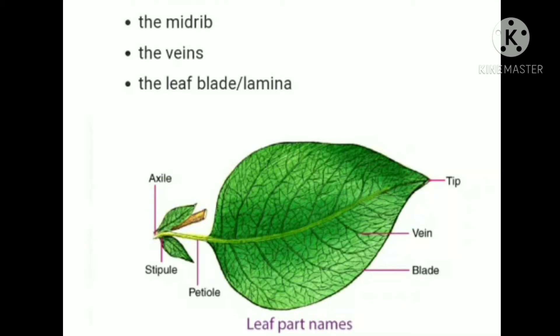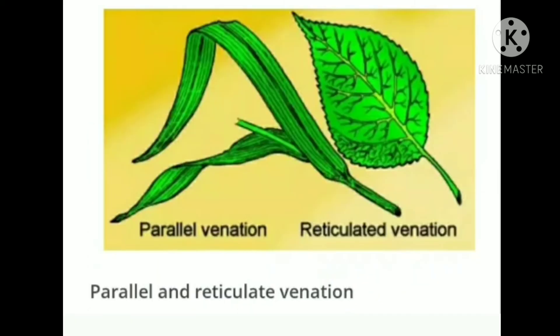There are two types of venation: reticulate and parallel venation. In parallel venation, as seen in the leaves of grass, the veins are parallel to one another. In reticulate venation, the design is net-like on both sides of the midrib. This venation is called reticulate venation.